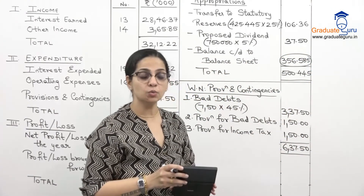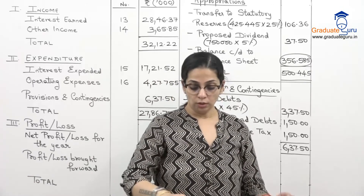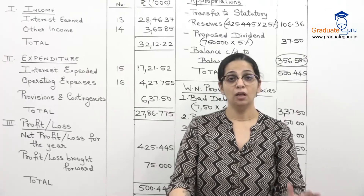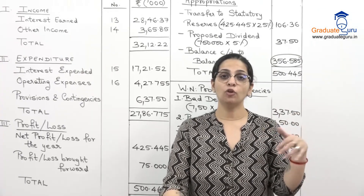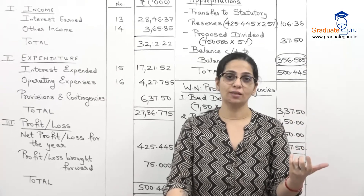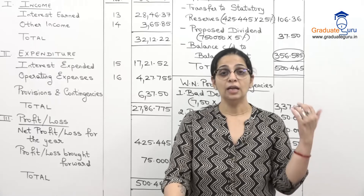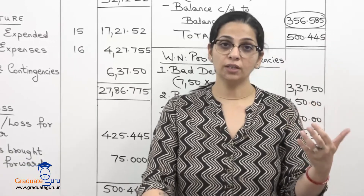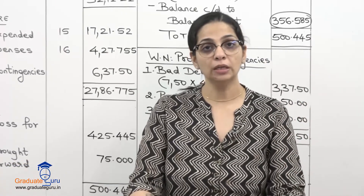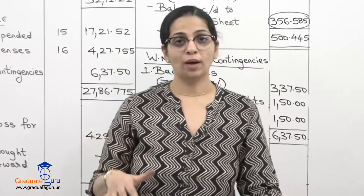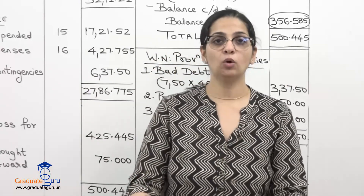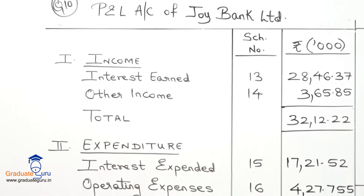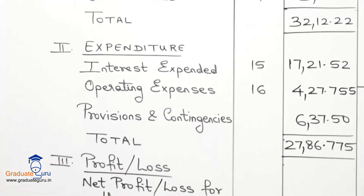So how was this sum different from the last one? In the last sum there were no appropriations; there was more breakup for interest and provisions. In this sum we focused on how to appropriate profit to dividends as well as to statutory reserves. Take down this sum — we wind up the session here. Next session we'll be going for some sums with balance sheet preparation. Thank you.